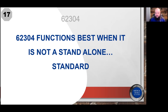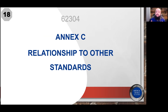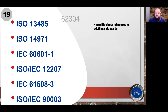Just like many other international standards, 62304 functions best when it's not used as a standalone standard. In fact, there's a dedicated annex that explains the relationship of 62304 to other international standards. Specifically, those standards happen to be 13485, 14971, 6601-1, 12207, 61508-3, and 9003. That doesn't mean those are the only standards referenced — reading through 62304, it will contain specific references to individual clauses of other standards, called out within the text of 62304.